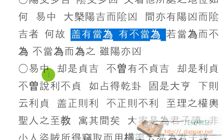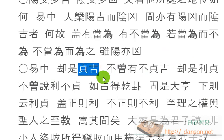역중에는 문득 정길, 고두면 길한 것이 되고. 정길이란 말은 고두면 길함이 되고. 불중요 불정길, 곧지 못한 것이 길함은 일찍이 있지 않았어요. 곧지 않은 것은 길하지 않다 이거죠. 도시리정이요, 그것은 모두 다 정, 고든 것이 이루운 거고.